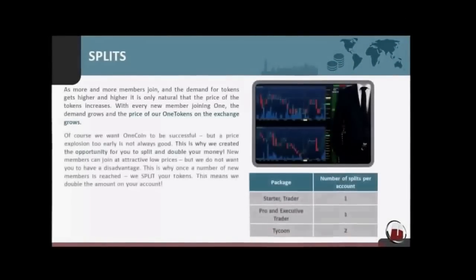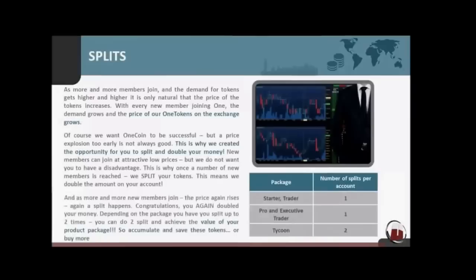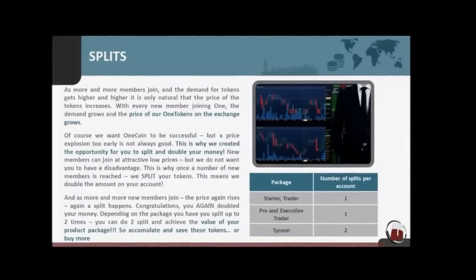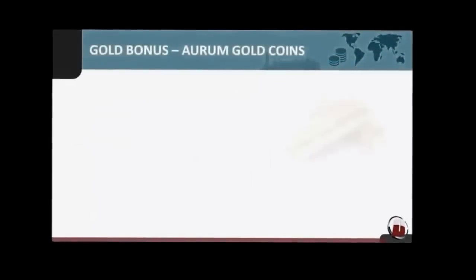As the One tokens increase in price on our exchange, you will profit not only from the price increase but moreover through the split of the token. This means you double your amount of tokens after a split. By holding a Tycoon status you can split up to two times — that means four times your money.